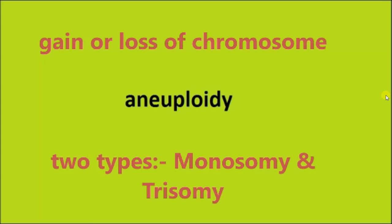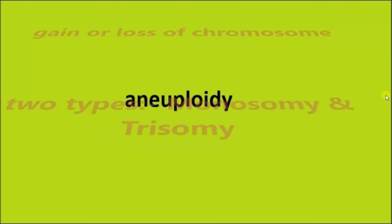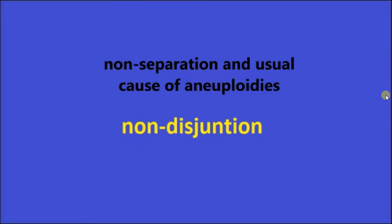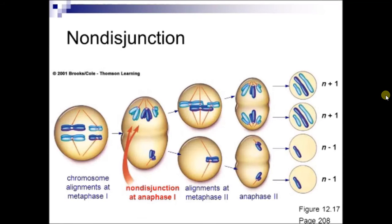Non-disjunction means non-separation, and it is the usual cause of aneuploidy. It is more likely to occur during oogenesis than during spermatogenesis.